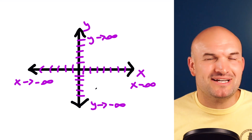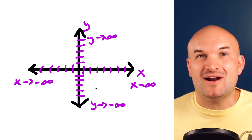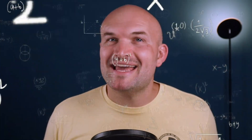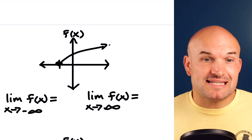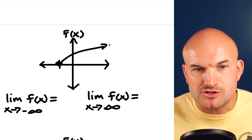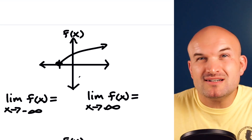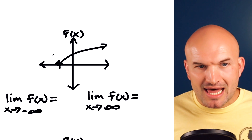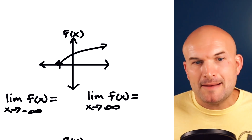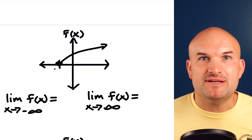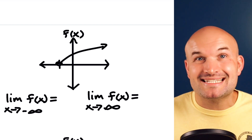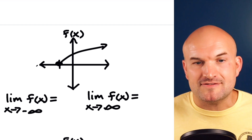Let's look at some examples. In this first example, you can see a graph that kind of resembles a square root function. If we expand this out, where's the graph going? To the left, the graph is not going anywhere — it stops at negative one and is not going anywhere. So the end behavior does not exist as we continue going to the left.